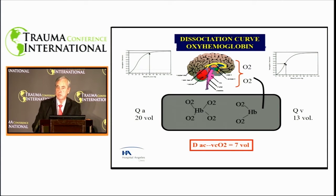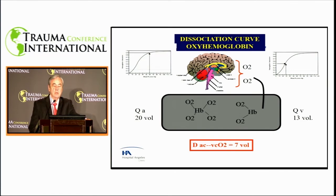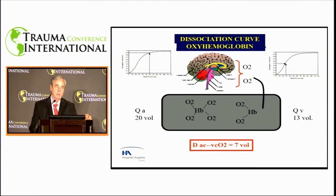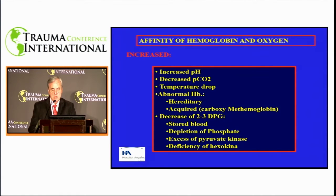The brain and heart are champions at taking oxygen from the blood perfusing them. The arteriovenous difference is 7, and the PVO2 in jugular venous blood returning from the brain is lower than what we find in the right atrium because of the extraordinary metabolism of the brain and heart. We mentioned yesterday that there's a difference of 10 there.